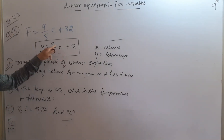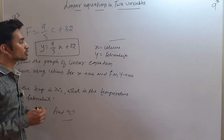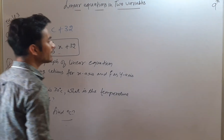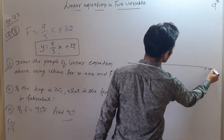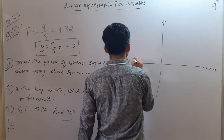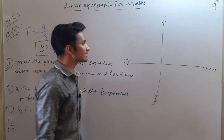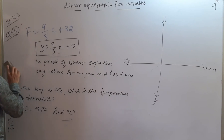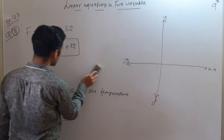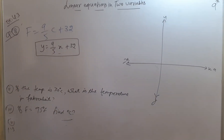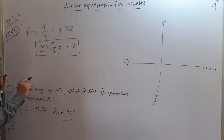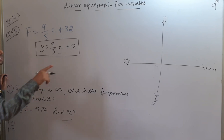X and Y are unknown to us, but we have a relation between them. To draw the graph we need to find coordinates by using the solutions of this equation, then by joining all the points we can draw the line representing the linear equation in two variables.